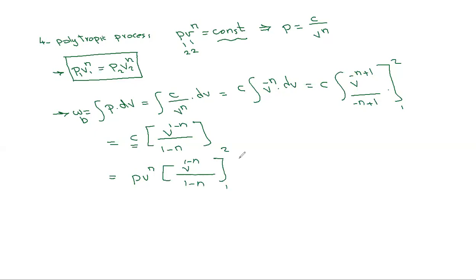Let me write P1V1 to the power n, open bracket. Taking the upper limit first, that's V2 to the power 1-n minus V1 to the power 1-n.